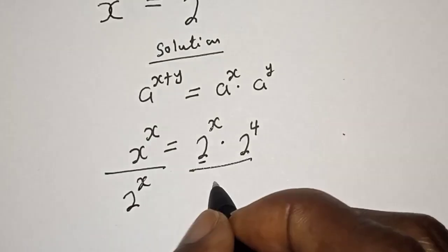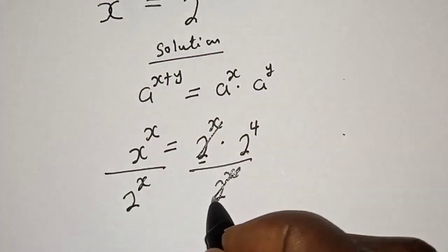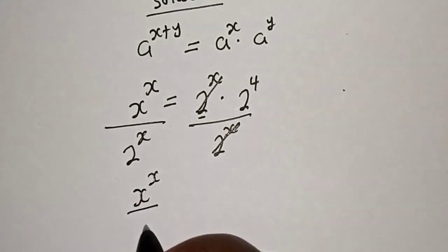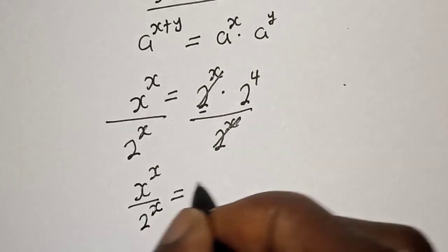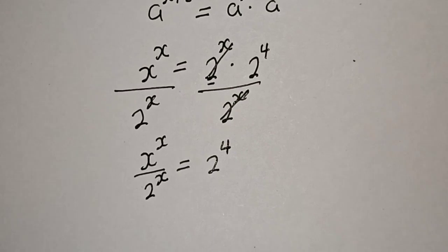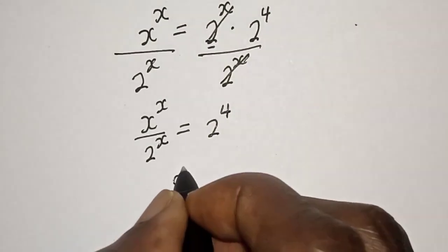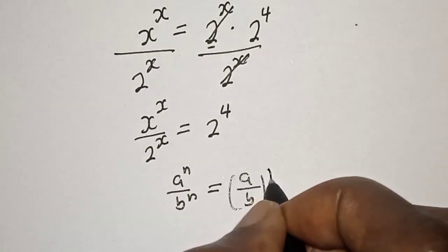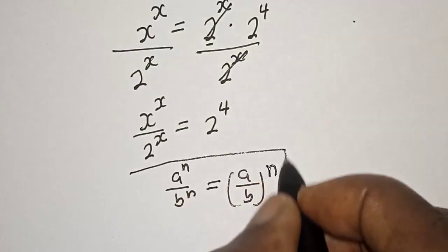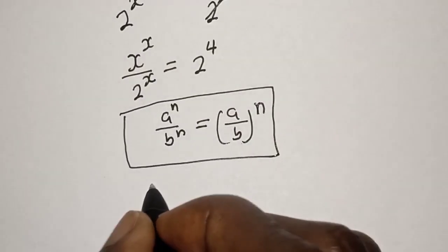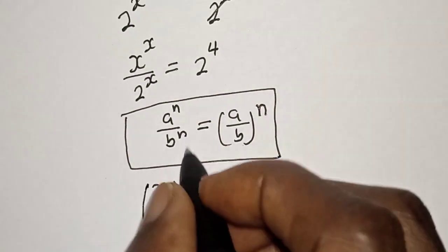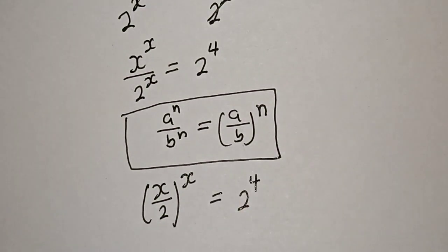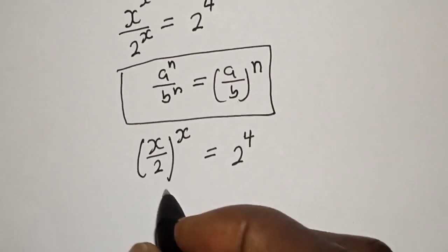Now let's divide both sides by 2 raised to power s. Divided by 2 raised to power s — this will cancel. We have s raised to power s over 2 raised to power s is equal to 2 raised to power 4. Now take note of this: if you have a raised to power n over b raised to power n, this is equal to a over b to the power of n.